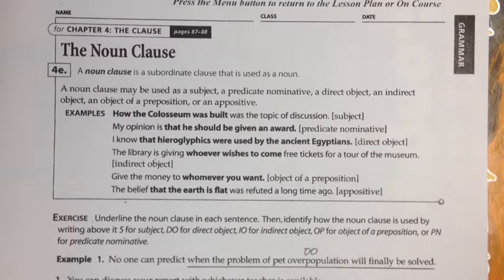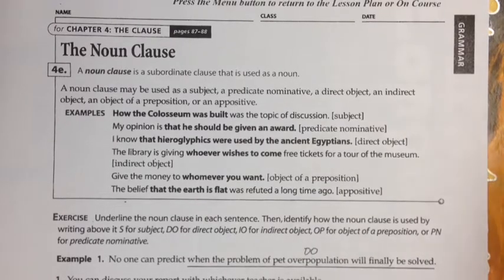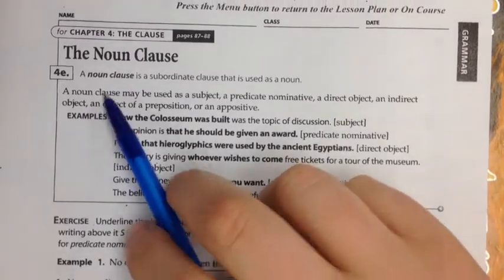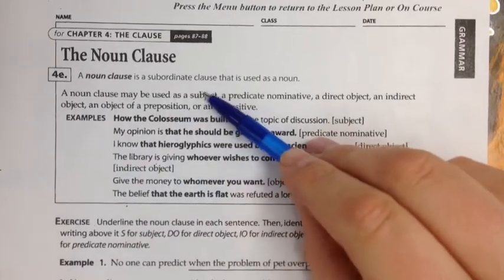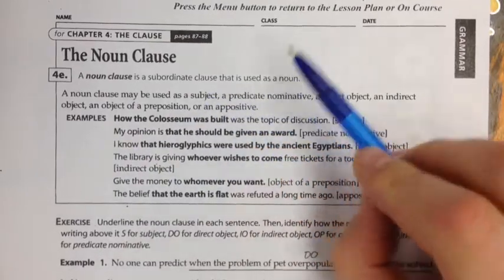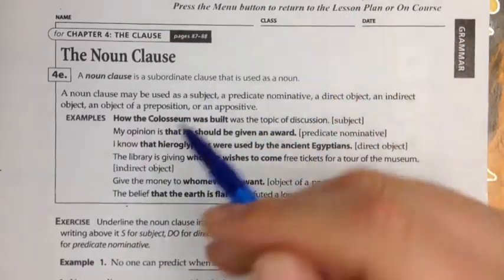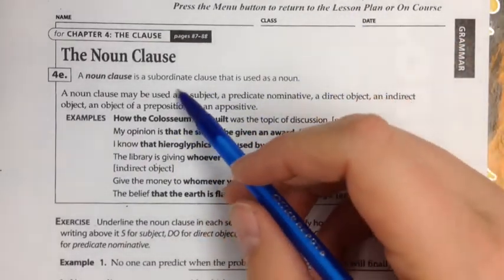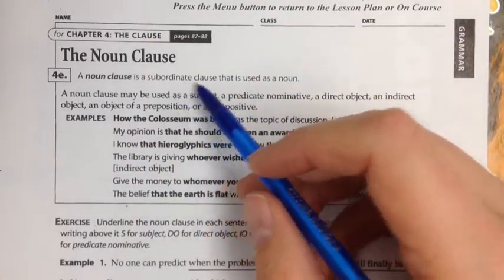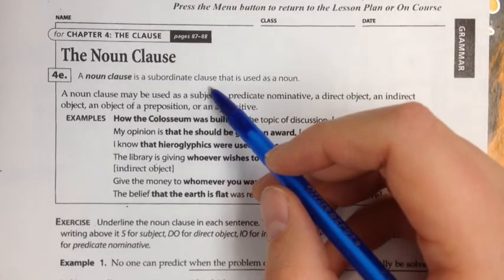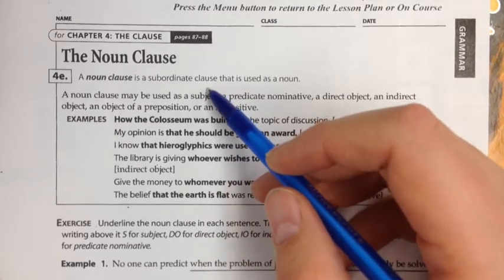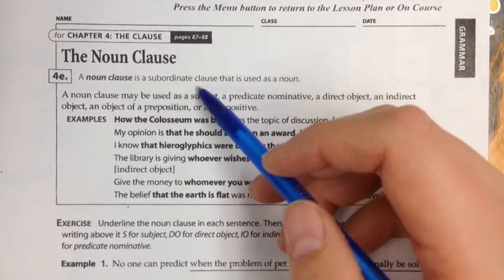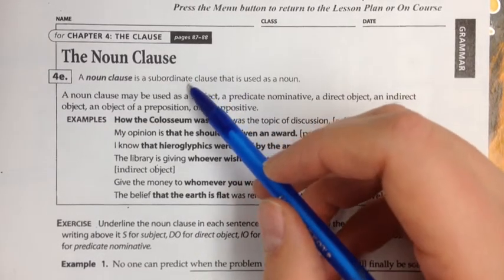This video is about the noun clause. A noun clause is a subordinate clause that is used as a noun. A subordinate clause is a group of related words that has a subject and a verb, but it can't stand alone as a complete sentence.